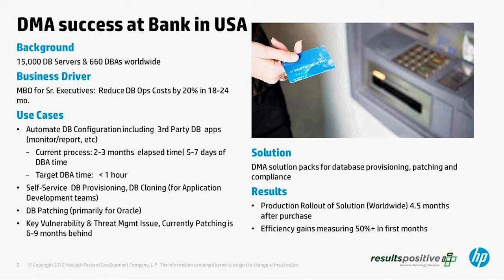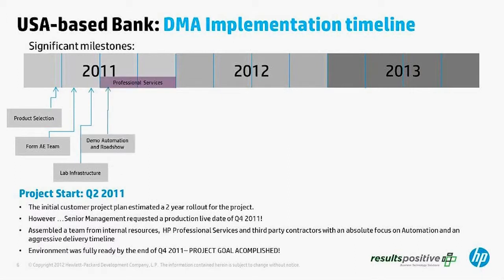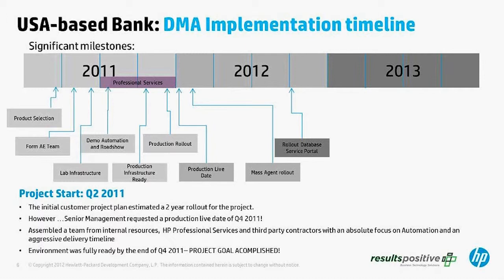This was quite a successful project. They rolled the product out much faster than anticipated and started seeing significant business impacts almost immediately. They selected a database and middleware automation solution from HP in early 2011 — around March of 2011. They had originally estimated it would take two years to roll out across their entire organization, based on their past experience rolling out solutions including a server automation product from another vendor.